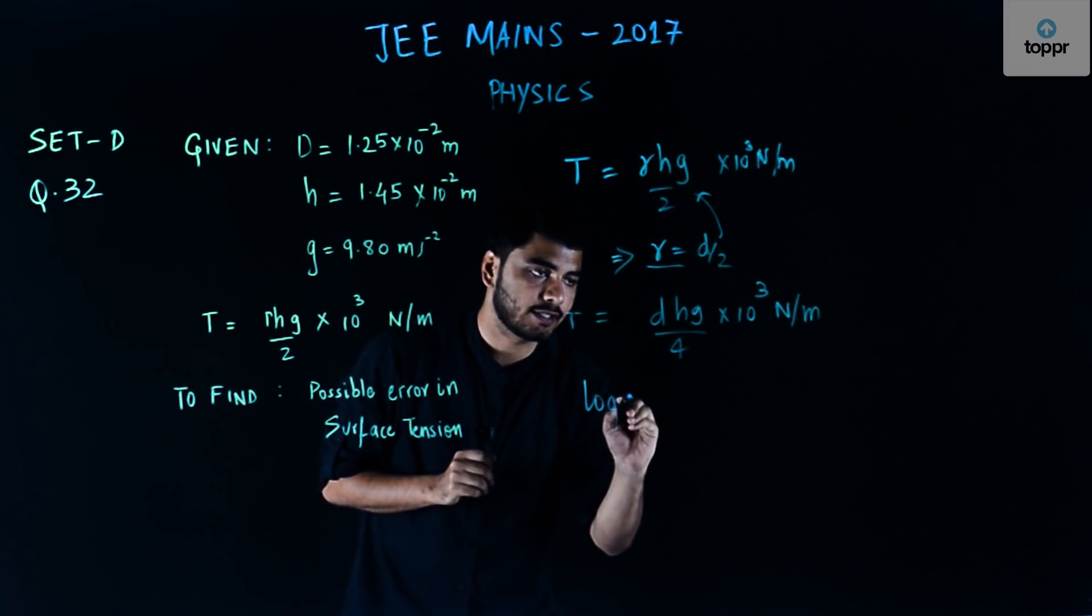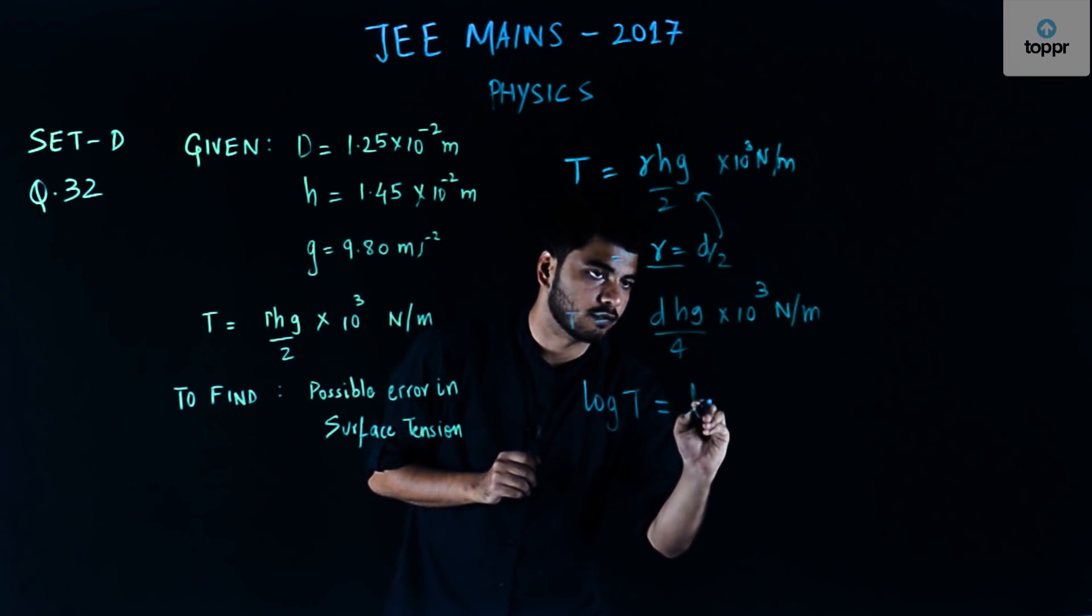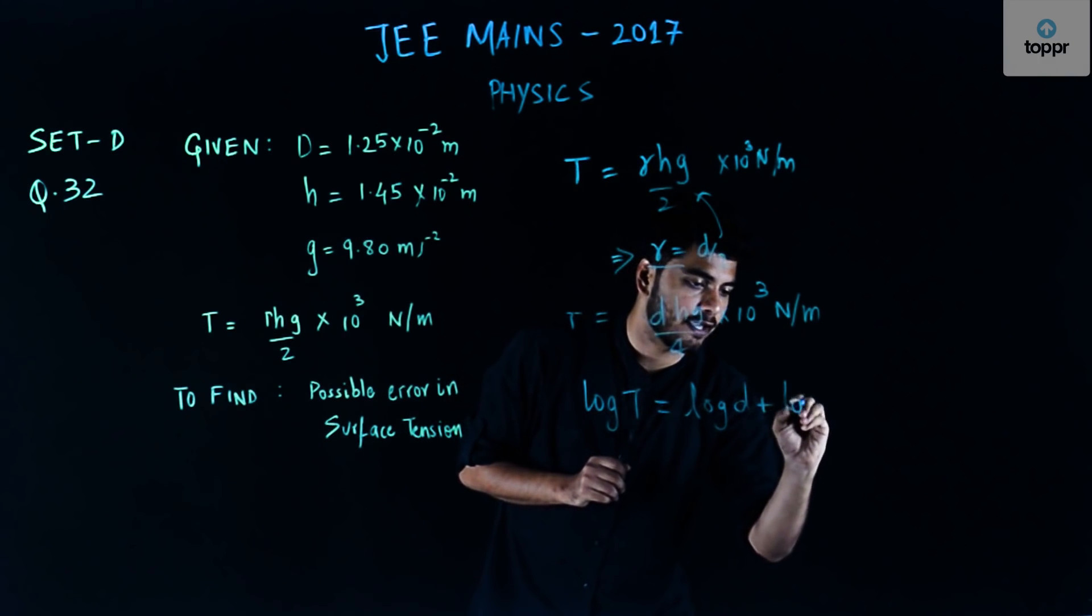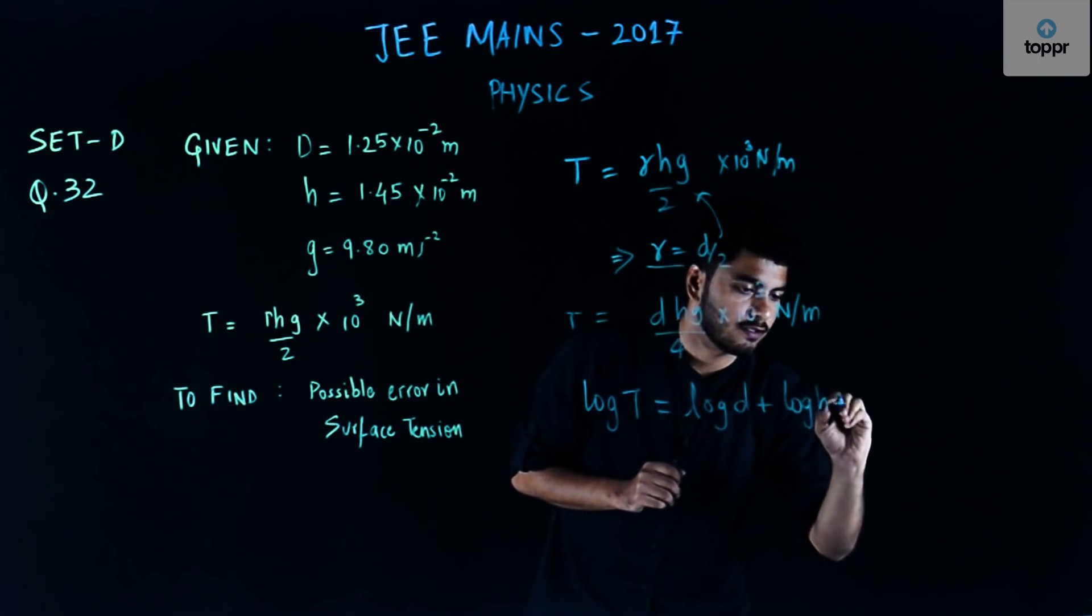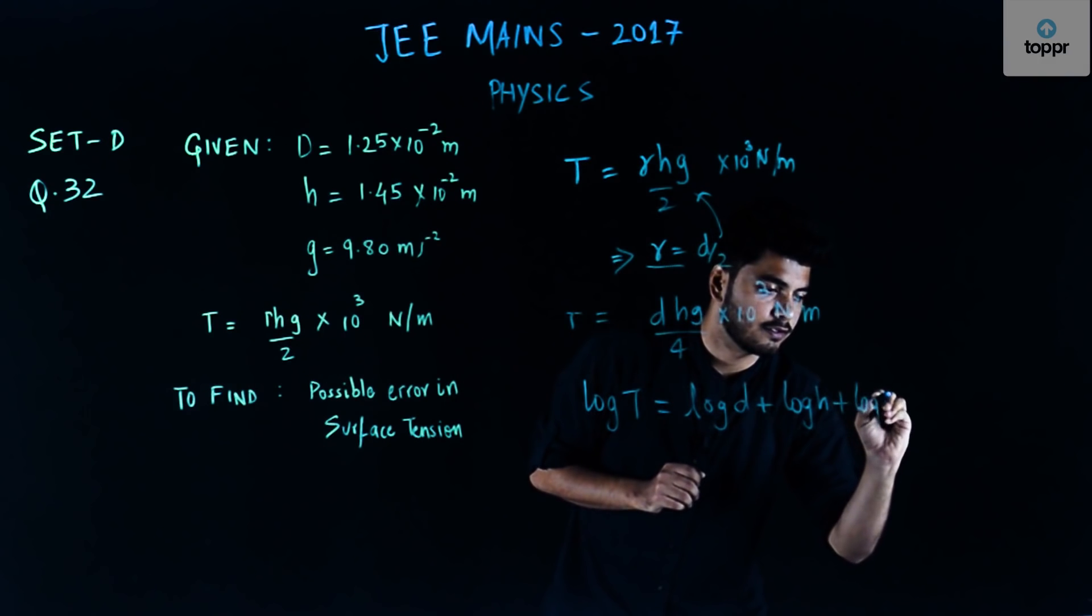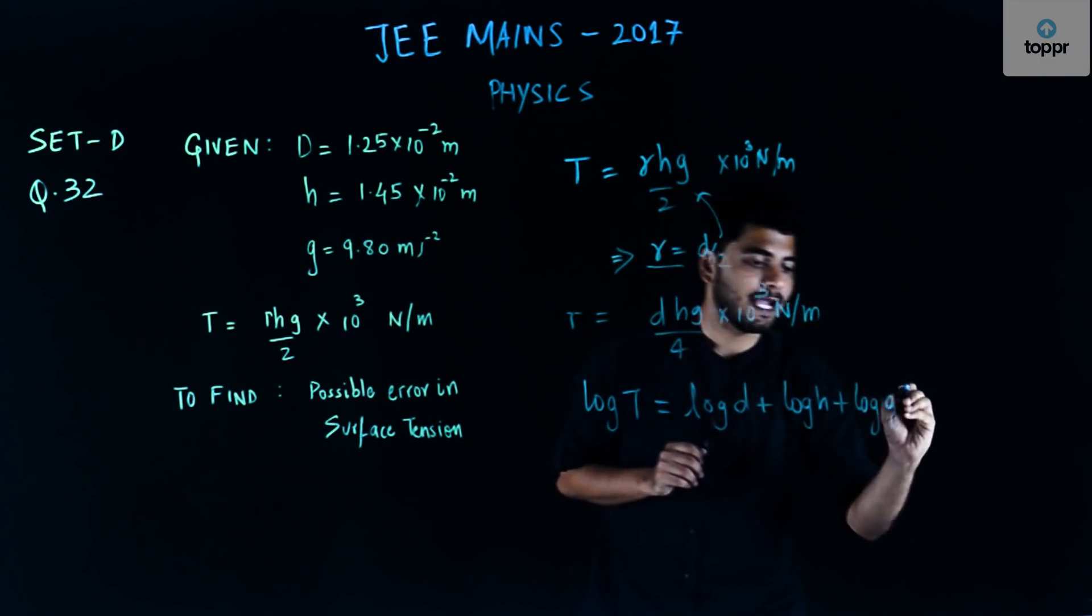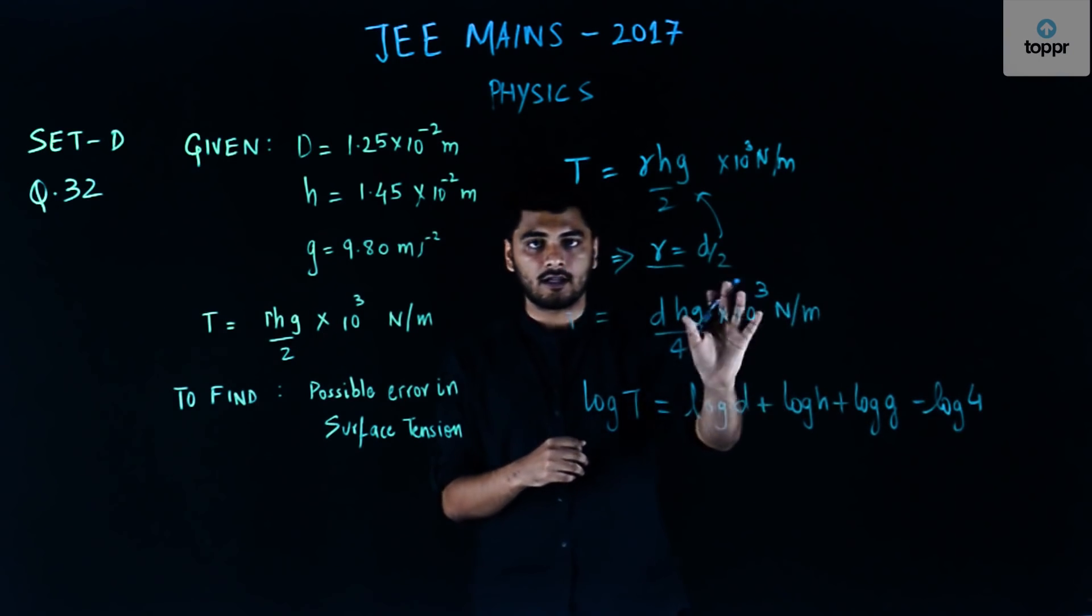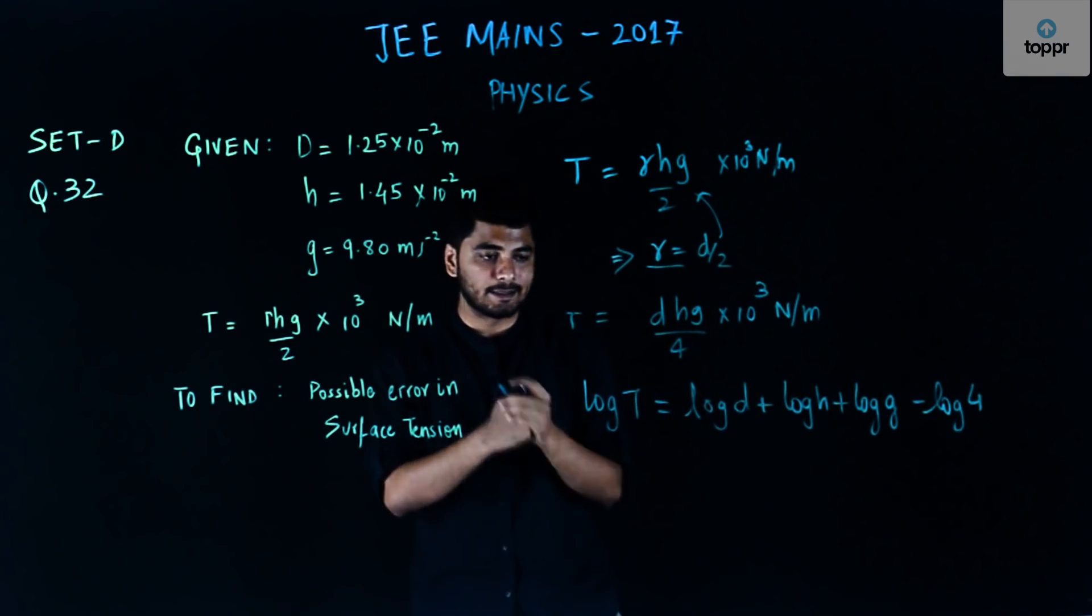So my log T would be log D plus log H plus log G minus log 4. At this moment I'm just not using this entire term.